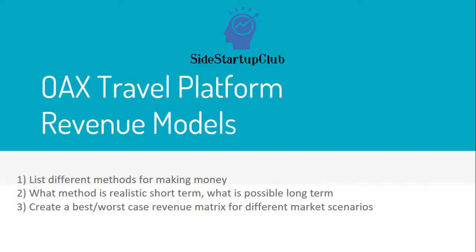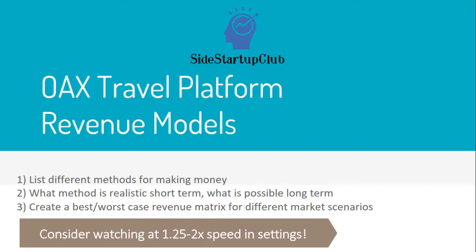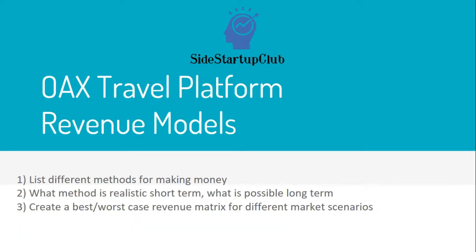We have three objectives here. In part one, we are just going to list as many options for making money that we can possibly think of. In part two, we're going to divide what's left into our realistic short-term revenue model and things we could try in the future as this grows. And lastly, we're going to create a best case and worst case scenario for our revenue streams.